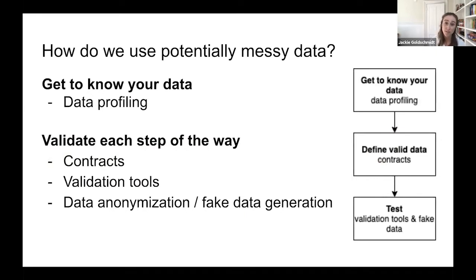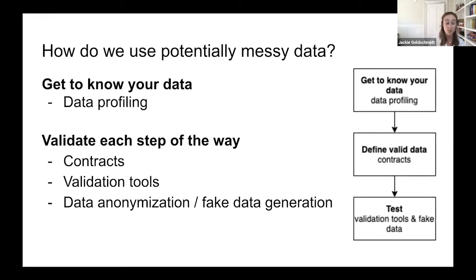The key things to take away from this talk: when you work with data pipelines using real-world data, first, get to know your data — ask qualitative questions and use data profiling tools to understand what your dataset actually looks like. Second, once you have a strong understanding of your data, make sure you are validating that data each step of the way in your data pipelines. Approaches include API contracts, validation tools, and data anonymization and fake data generation to create reliable tests.